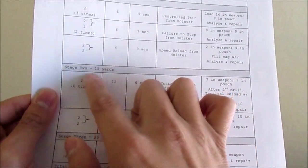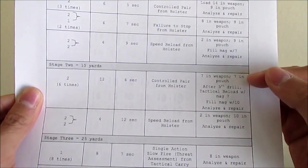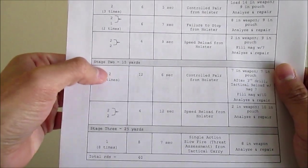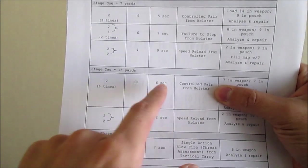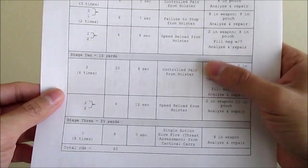So now you'll be at 15 yards. You'll have 7 in the weapon and 7 in your pouch, in your magazine pouch. And then you take 2 shots from the holster. They give you 6 seconds this time because you're a little bit farther away. And you'll do that a total of 6 times.